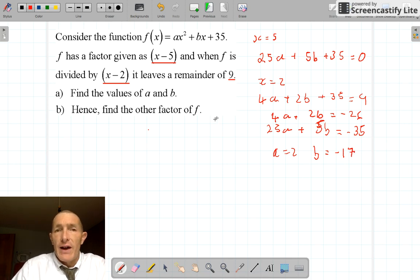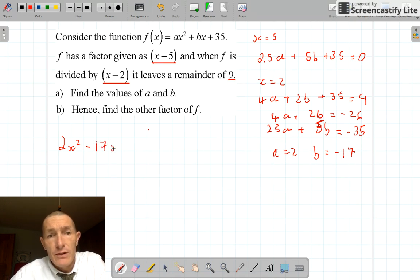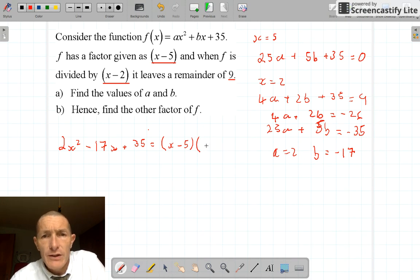Now the other factor. Now what I could do is, now I know that my quadratic is 2x squared minus 17x plus 35, what I could do is I could try and factorize that, but there's actually a much easier way than trying to factorize all of that. Because I've got one factor which is x minus 5, and the other factor is, well let's just call it px plus q.